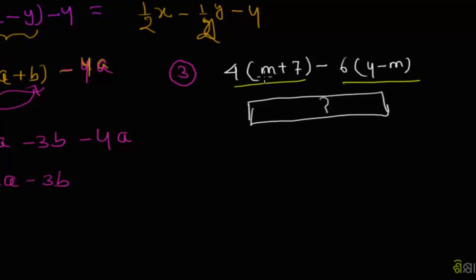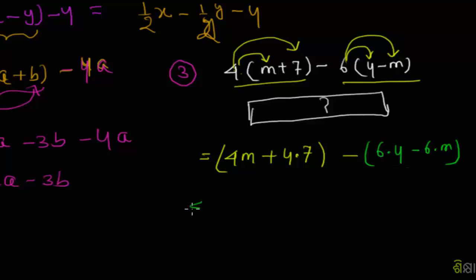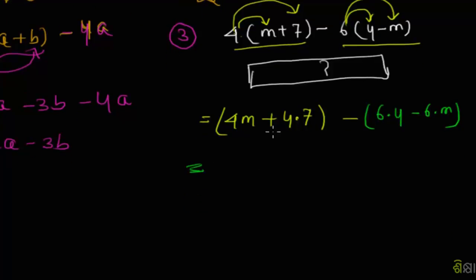Expanding: 4 times m is 4m, 4 times 7 is 28. So we get 4m + 28 minus 6m.